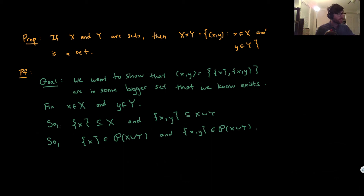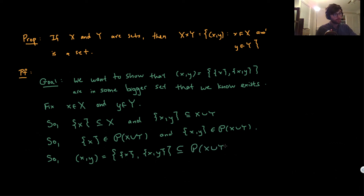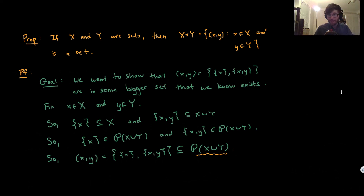So how does this help us? The ordered pair (x, y) by definition equals the set containing {x} and {x, y}. This is a subset of the power set of X union Y. Why? Because to be a subset, each element must be an element of the thing on the right. The ordered pair has two elements: {x} and {x, y}, and both are elements of the power set of X union Y. So by the definition of power set one more time, this gives us our key fact.